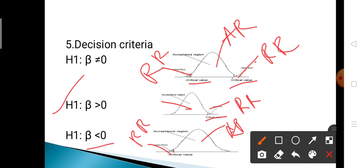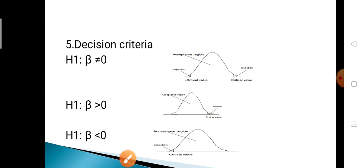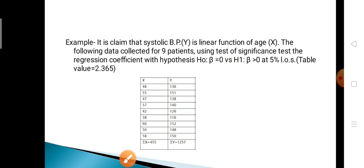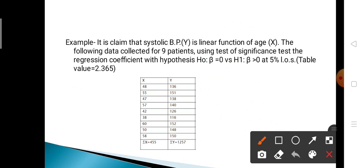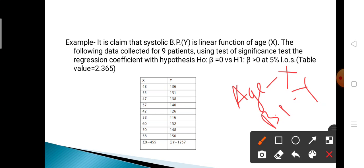These are the steps involved in the testing of hypothesis for the regression test. Now let's see one example. It is claimed that systolic blood pressure (y variable) is a linear function of age (x variable). Data was collected for nine patients.